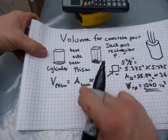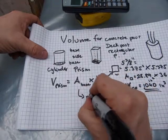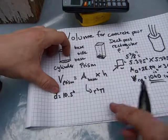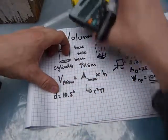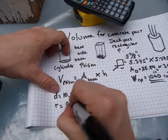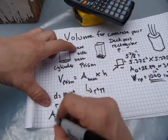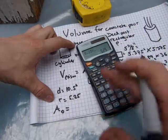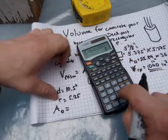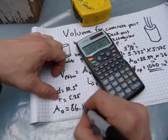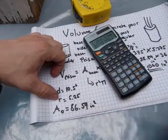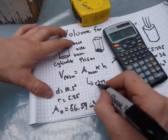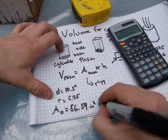The cylinder gets the same treatment: area of the base times its height. The area of the base is π × r². The diameter was 10.5 inches, but that's not the radius — radius is half that, so radius = 5.25 inches. So the area of the base is 5.25 × 5.25 × π, which equals 86.59 square inches.